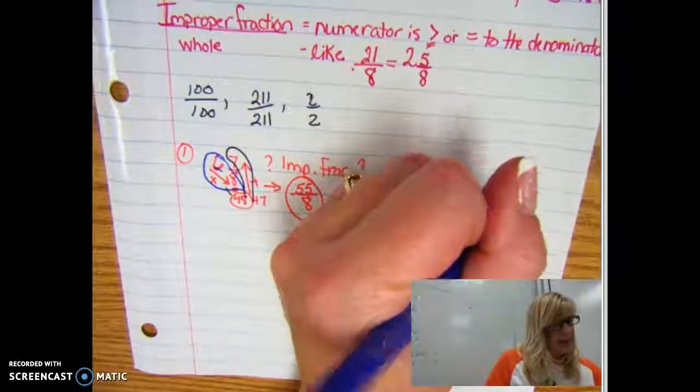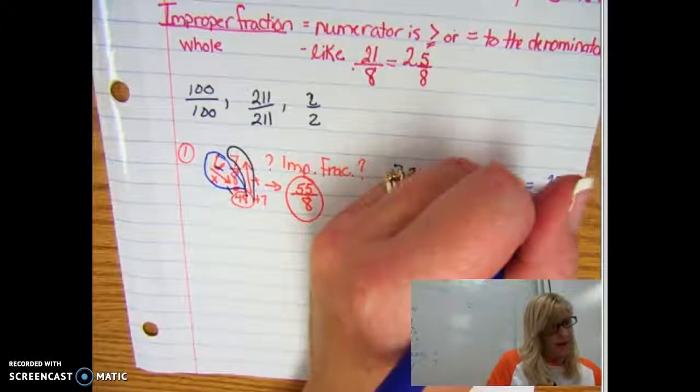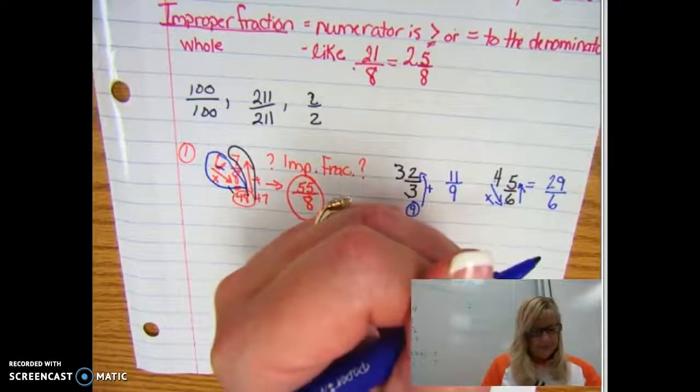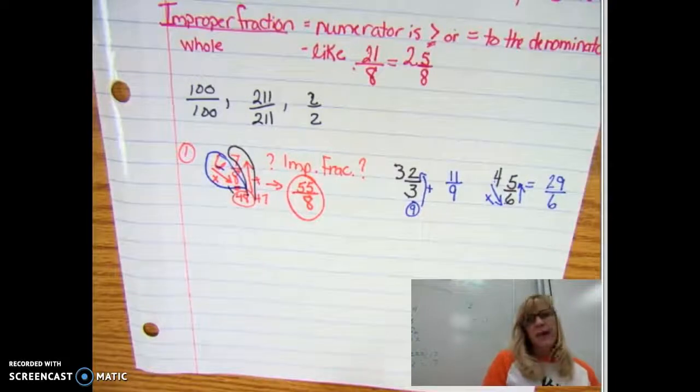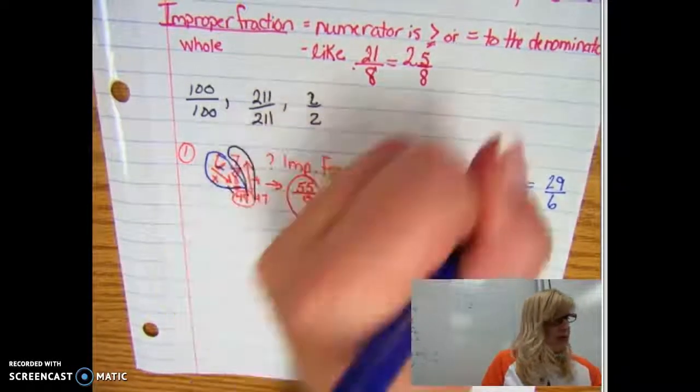All right, so we're going to multiply these two and I know that six times four is 24, and then I have five extra pieces to add on to that 24, giving me 29 pieces. And what size are they? They are sixths.